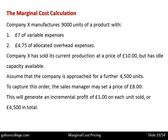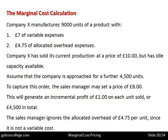It's not a profit — that's a wrong use of the word. The sales manager ignores the allocated overhead of £4.75 per unit since it's not a variable cost. The sales manager doesn't take the overheads into account — it simply asks: what will it cost to produce each unit? It'll cost £7.